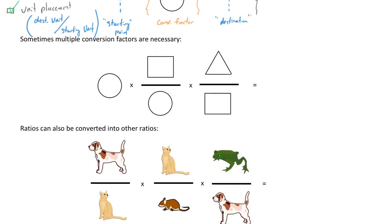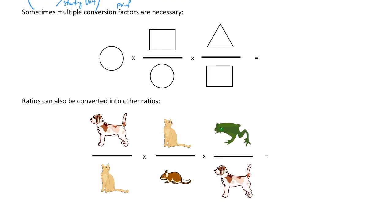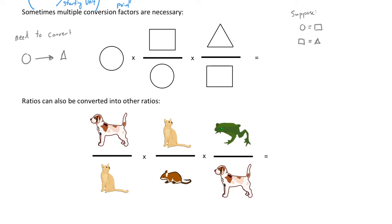Frequently, it's necessary to use multiple conversion factors in order to change a given unit into a desired unit. This happens when we don't have a direct conversion factor but we do have intermediate ones to bridge the gap. For example, suppose we needed to convert circles into triangles but didn't have a direct conversion factor. We could first convert circles into squares, then squares into triangles. The unit circles cancels with circles and squares cancels with squares, leaving us with triangles.